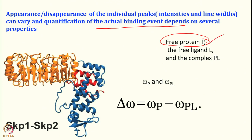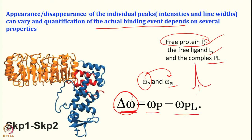Suppose we have a free protein P and a free ligand L, forming a complex PL. For free protein there is a chemical shift omega P, and when protein forms a complex PL, its chemical shift changes to omega PL. The change we are monitoring, delta omega, is omega P minus omega PL. By knowing the ligand concentration, the rate, and the population, we can find out the free population and the bound population, as well as various thermodynamic parameters.